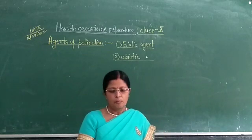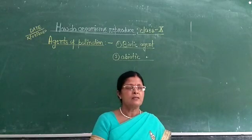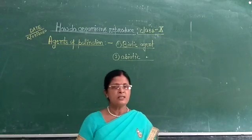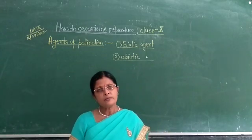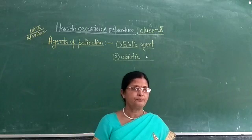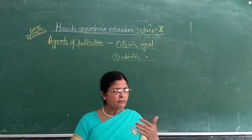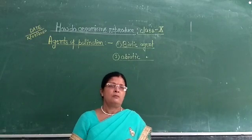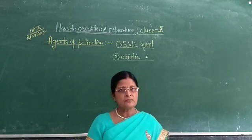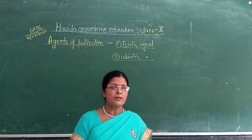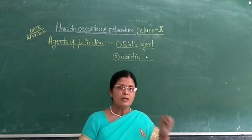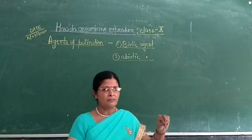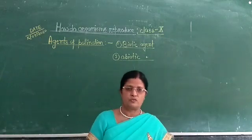Therefore, pollination takes place with the help of an agent. Agents may be biotic or abiotic. There are many factors or events by which pollen grains transfer from the anther to the stigma of another flower of the same plant or of another plant.